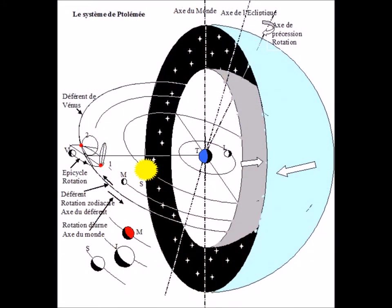Ptolemy maintained the central and fixed position of the earth, the circular trajectories, and the constant velocities on each circle, only compatible with the perfection necessary for the creation. The center of the earth is thus still the center of the world.